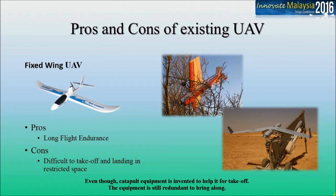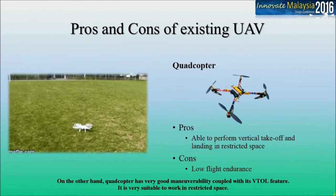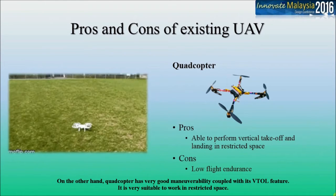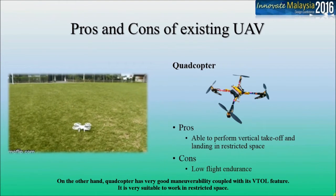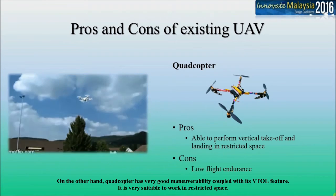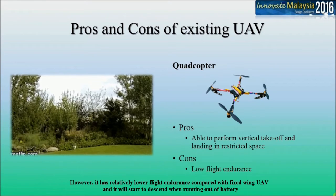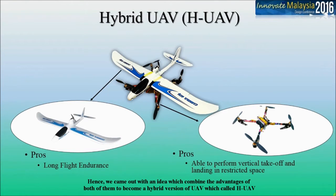The catapult equipment is still redundant to bring along. On the other hand, quadcopter has very good maneuverability coupled with its vertical takeoff and landing feature, making it very suitable to work in restricted spaces. However, it has relatively lower flight endurance compared with fixed-wing UAV and will start to descend when running out of battery. Hence, we came up with an idea combining the advantages of both into a hybrid version of UAV called HUAV.